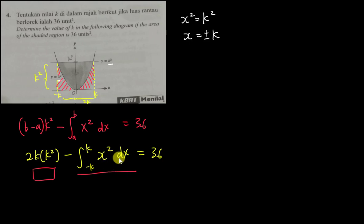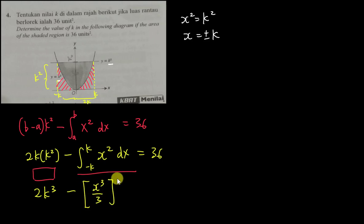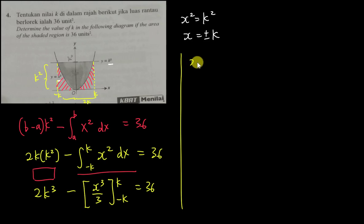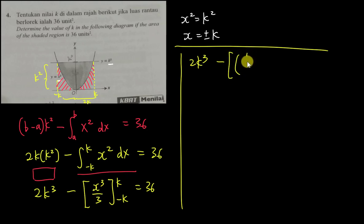So I just need to solve this. The rectangle term 2k · k² gives 2k³. Integrating x² gives x³/3, evaluated from negative k to k, which equals 36. Substituting gives k³/3 minus (−k³/3), which equals 36.